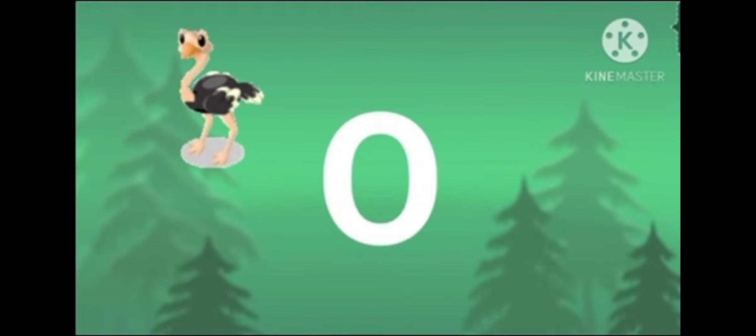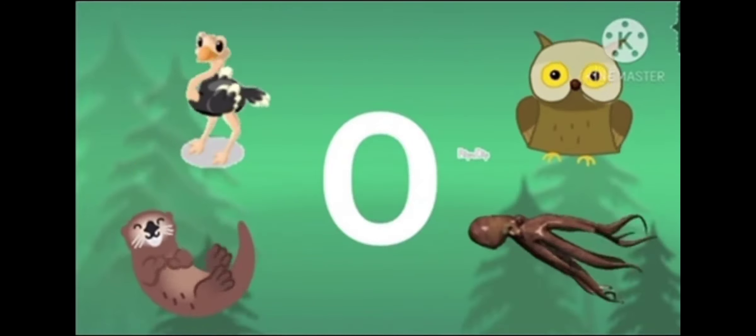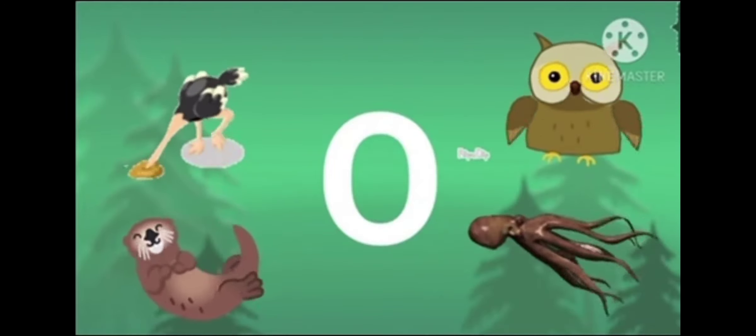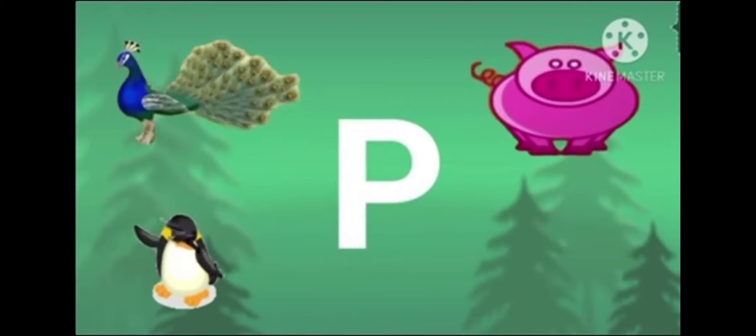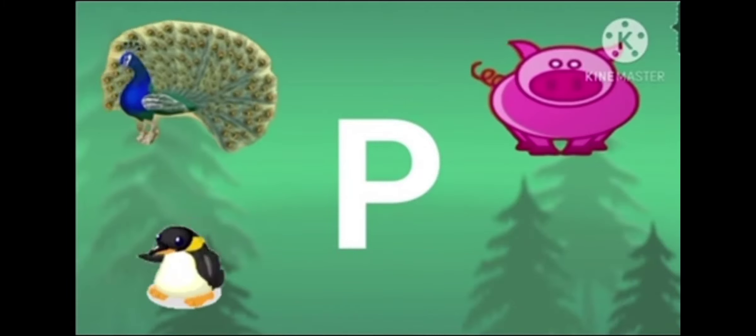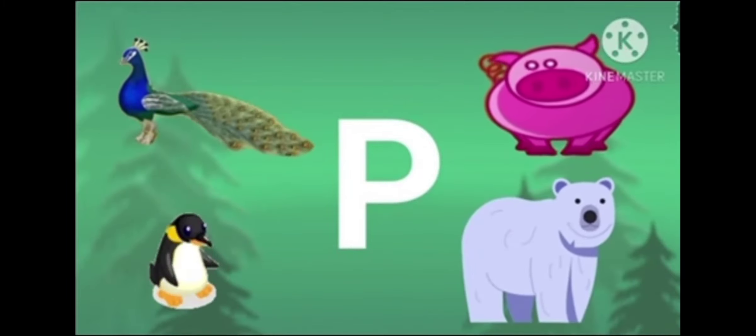O is for ostrich, otter and owl. O is for octopus with eight amazing arms. P is for peacock, penguin and pig. P is for polar bear in the Arctic.